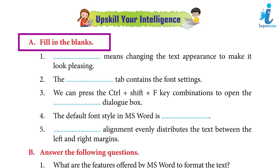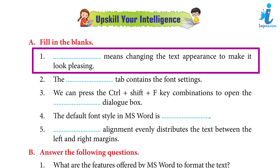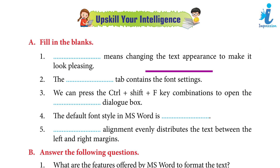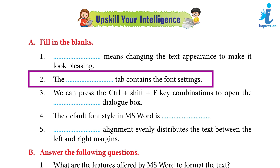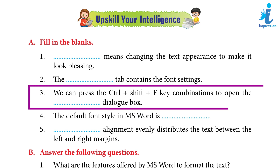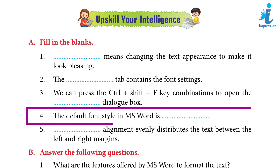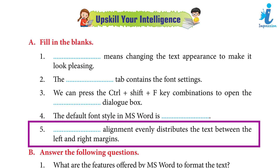Fill in the blanks: 1. Formatting means changing the text appearance to make it look pleasing. 2. The Home tab contains the font settings. 3. We can press the Ctrl+Shift+F key combination to open the Font dialog box. 4. The default font style in MS Word is Calibri. 5. Justify alignment evenly distributes the text between the left and right margins.